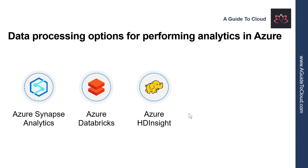Azure HD Insight is a managed analytics service in the cloud. It's based on Apache Hadoop, a collection of open-source tools and utilities that enable you to run processing tasks over large amounts of data. HD Insight uses a clustered model similar to that of Synapse Analytics, stores data using Azure Data Lake Storage, and you can use HD Insight to analyze data using frameworks such as Hadoop MapReduce, Apache Spark, Apache Hive, Apache Kafka, Apache Storm, R, and more.